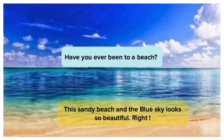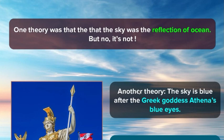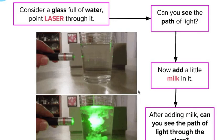Now, have you ever been to a beach? You can see the sandy beach and the blue sky - it is so beautiful, right? One theory was that the sky was a reflection of ocean. The sky is blue. Have you ever wondered why the sky is blue? Why not red, pink, purple, violet - why not something else? Why only blue? Another theory was religiously, mythologically - there was a Greek goddess Athena, and Athena's eyes were blue, so people thought that's why the sky is blue. Scientifically, that's not the reason. Let's understand why.